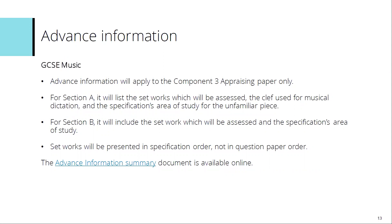Looking at the summary detail that came out in December for GCSE Music, the advanced information will apply to Component 3 appraising only. For Section A, it will list the set works which will be assessed, you'll get the detail of the clef used for the musical dictation question, and you'll get the specification's area of study for the unfamiliar piece. For Section B, it will include detail of the set work which will be assessed and the specification's area of study. The set works will be presented in the specification order rather than the question paper order.